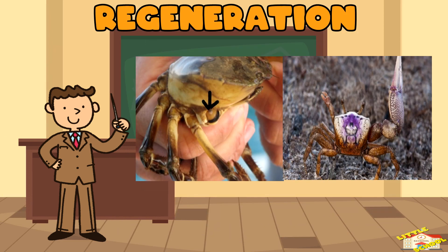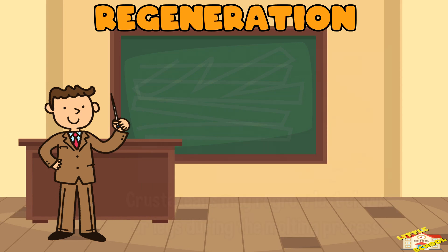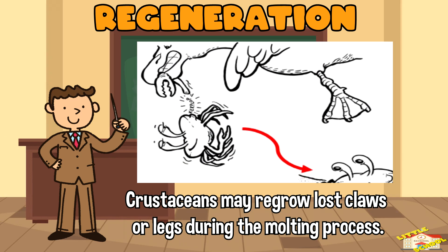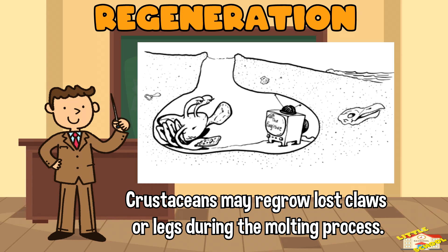Regeneration: some animals undergo molting to regenerate lost body parts or damaged tissues. For example, crustaceans may regrow lost claws or legs during the molting process.